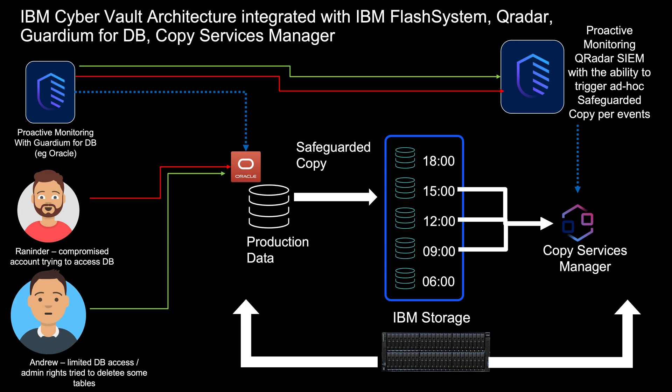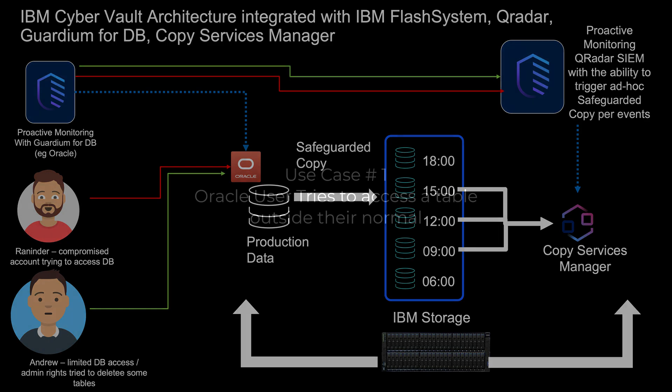If something is severe enough — where something would have damaged the database or was malicious — we'll take an extra copy. Not only will that action be stopped by Guardium, but Guardium will signal that to QRadar. And QRadar will say, because of the severity — and again, you can change it by your own company policies — we'll take an extra safeguarded copy, just to be on the safe side.